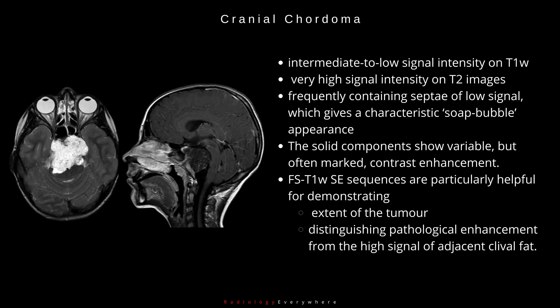MRI features include intermediate to low signal intensity on T1-weighted images and very high signal intensity on T2 images, frequently containing septae of low signal which gives a characteristic soap bubble appearance. The solid components show variable but often marked contrast enhancement. Fat-suppressed T1-weighted images are particularly helpful for demonstrating the extent of the tumor and distinguishing pathological enhancement from the high signal of adjacent clival fat.